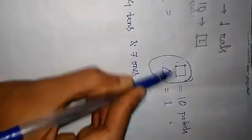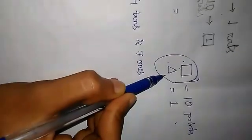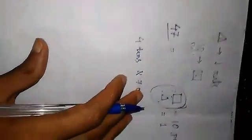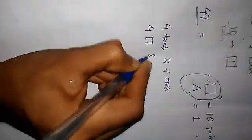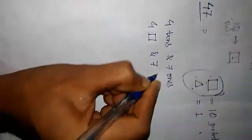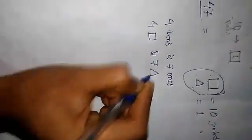So I can show number 47 as 4 squares and 7 triangles.